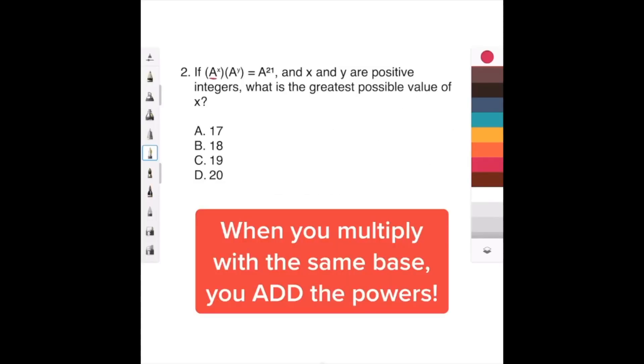All right, y'all, because we have the same base here and we're multiplying, right? What we can do is we can add these exponents, so it would become a to the x plus y equals a to the 21, okay?